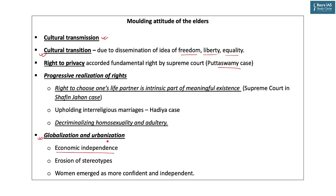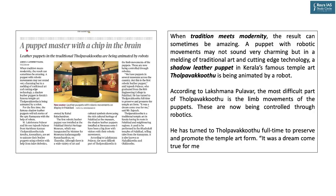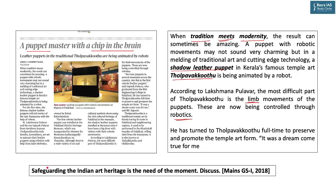The next article is from page 1: 'A puppet master with a chip in the brain.' A father-son duo has tried to revive the shadow leather puppetry art form of Kerala called Tholpavakoothu using technology. Moving the leg of the puppet is the most difficult part, attempted here using a robot. This is a fine example of tradition meeting modernity — with the advent of technology, art forms need not die but can be strengthened.